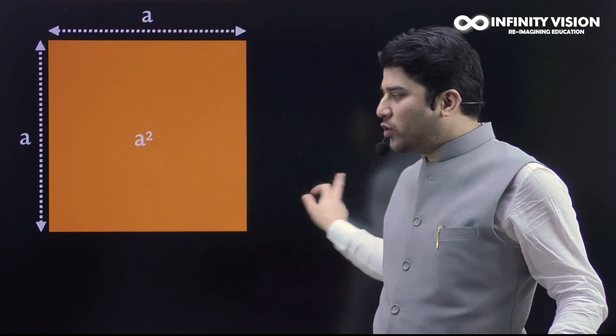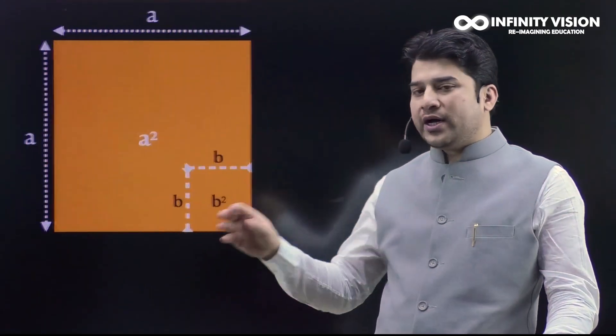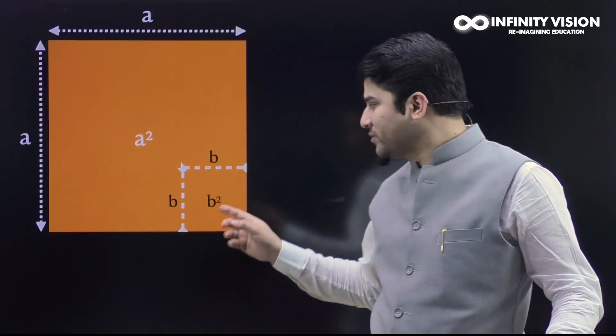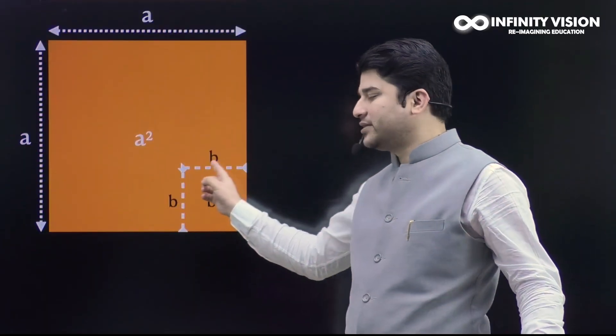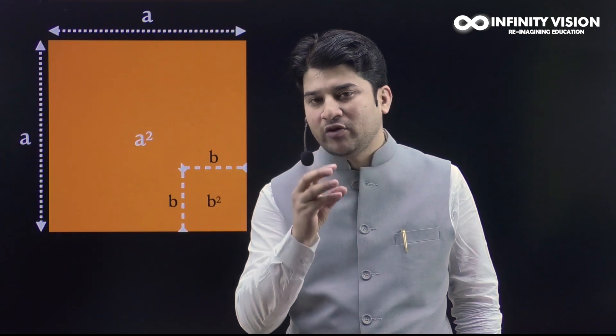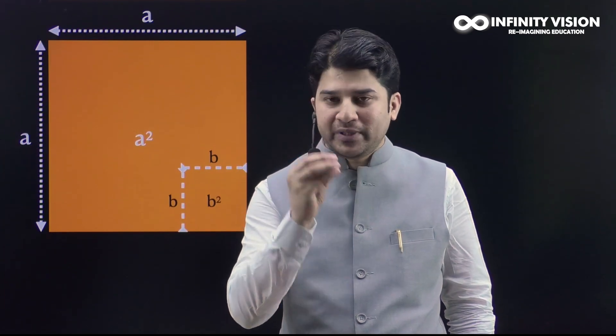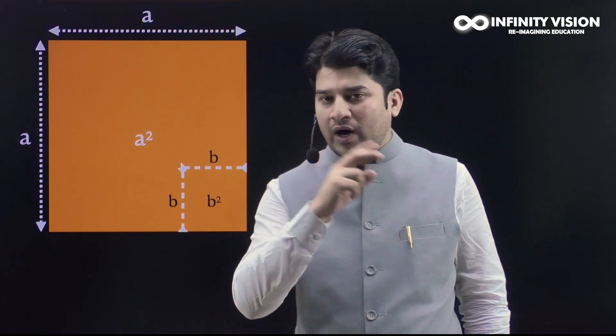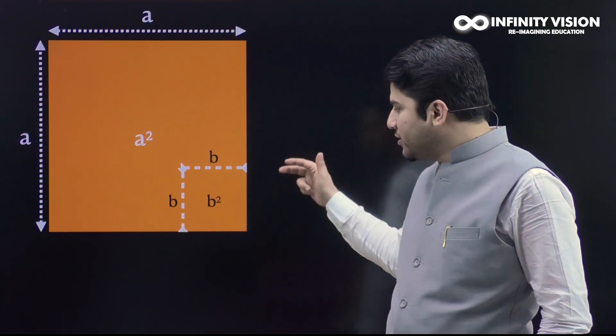If I ask you what is the area of this square, the dimension is a by a, so definitely the area is going to be a². Now I'm going to draw a smaller square in a corner, and I'm going to call its dimension b by b. So the area of the smaller square is going to be b².